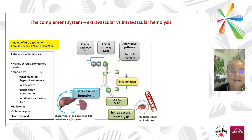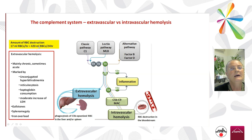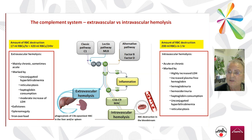Extravascular hemolysis is mainly a chronic disease, sometimes acute. Markers include unconjugated bilirubin, reticulocytosis, consumption of haptoglobin, and clinically gallstones, splenomegaly, and iron overload. The rate of destruction is about 17 ml per hour, or 420 ml in 24 hours.